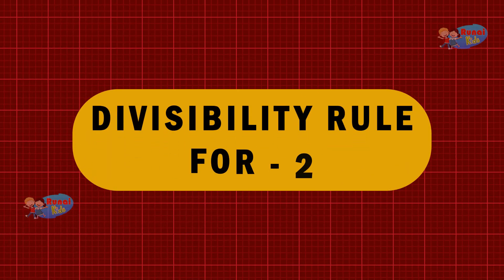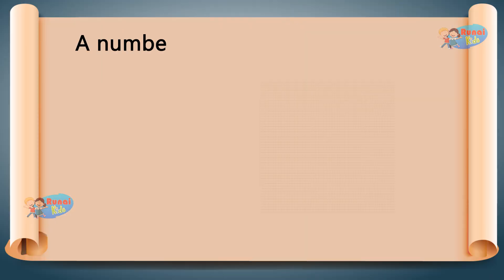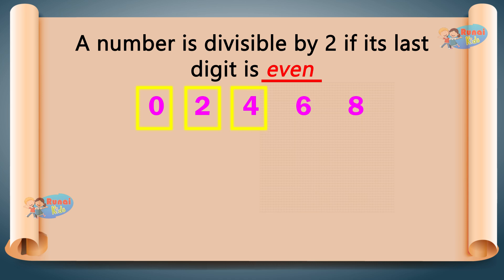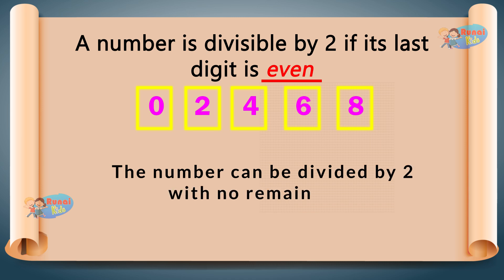Divisibility Rule for 2: A number is divisible by 2 if its last digit is even — 0, 2, 4, 6, or 8. Check the last digit. If it is 0, 2, 4, 6, or 8, the number can be divided by 2 with no remainder.